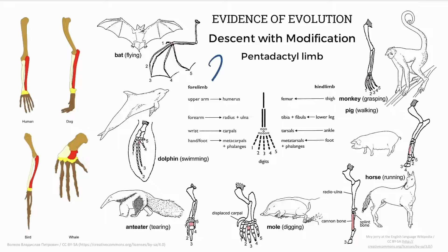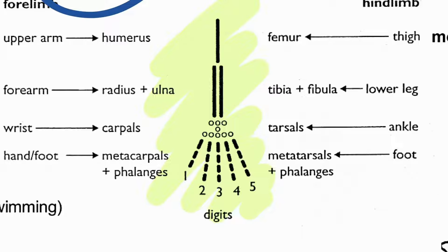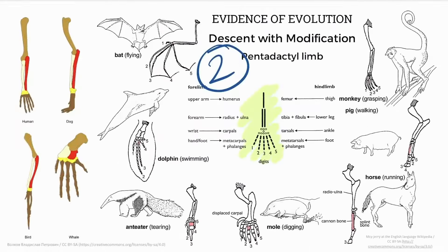Number two, we look at descent with modification. This is where a basic body plan, or pattern of bones, can be modified in different ways to adapt to different environments. For example, this simple body plan of an upper limb can be adapted in bats for flying. These similarities of body plans suggest a common ancestor.